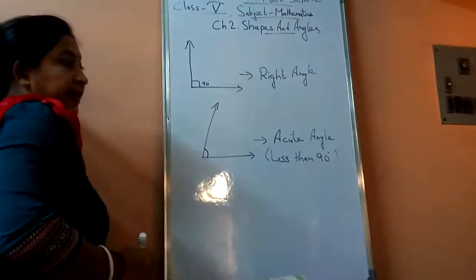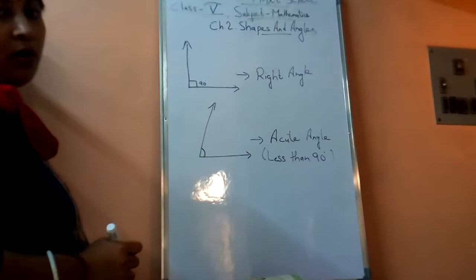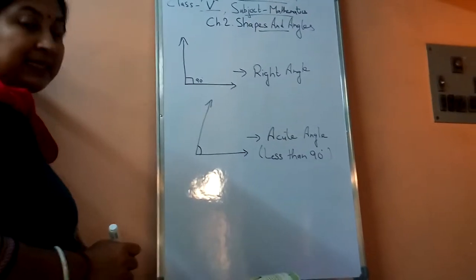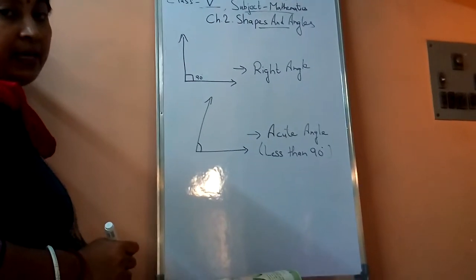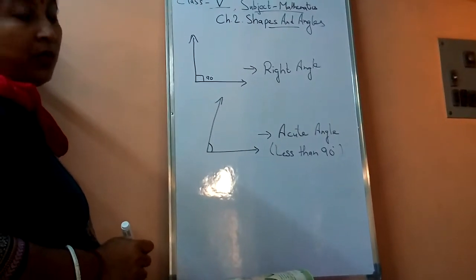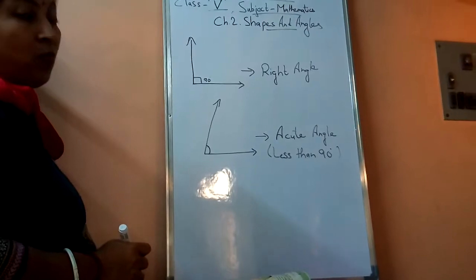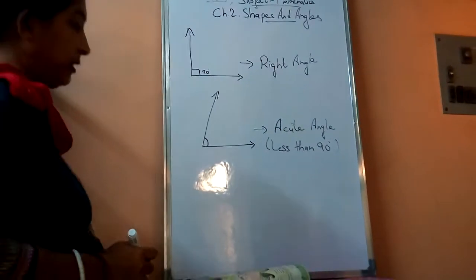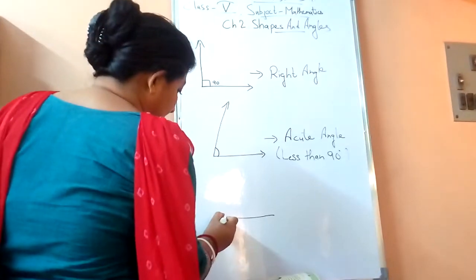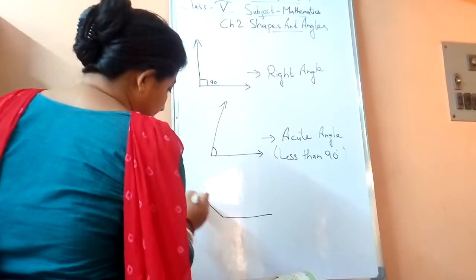So one is 90 degrees that is called right angle. One is less than 90 degrees that is called acute angle. Now the angles which are more than 90 degrees will be like this.